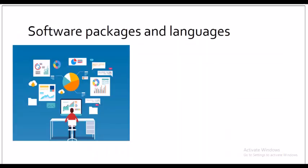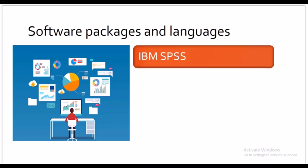Now, coming to the software packages and languages, some are used for statistical analysis. The first one is IBM SPSS. SPSS is a widely used program for statistical analysis. Many features of SPSS statistics are accessible via pull-down menus. The software was acquired by IBM and it's a very simple package that can be used by non-statisticians too.